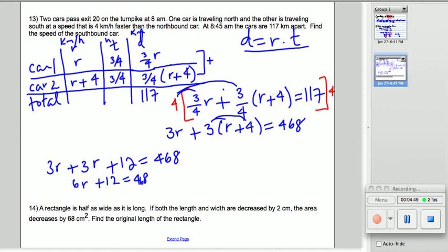Oops. And we're going to subtract 12 from both sides. So, we get 6r equals 456. And then divide both sides by 6. So, r equals 76.